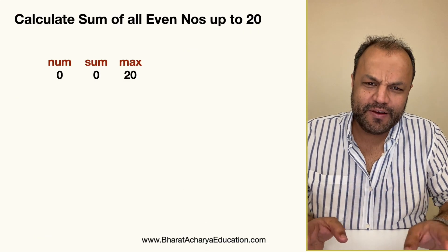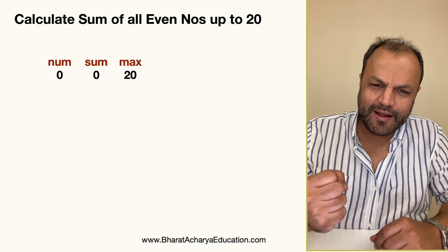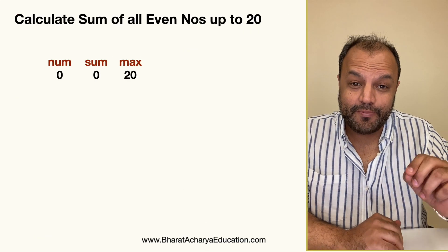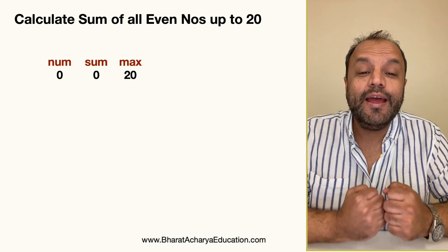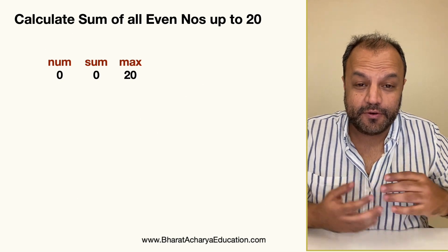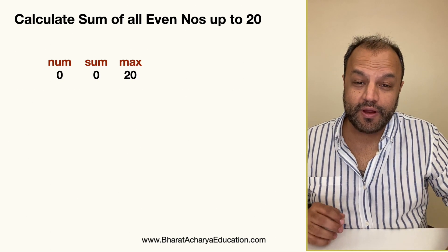What's your approach? Define a few variables: a number which will keep incrementing, your max number 20, and a sum which will be initialized with zero.